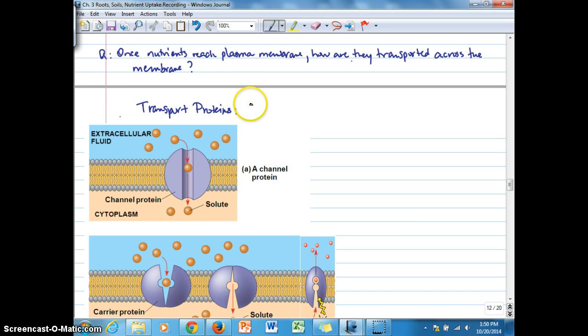Transport proteins can be involved in facilitated diffusion, which is a type of passive transport, which means that it doesn't require energy produced by the cell. The types of transport proteins that we see with facilitated diffusion are channel proteins.